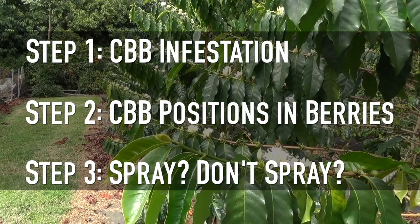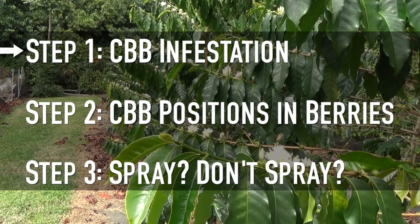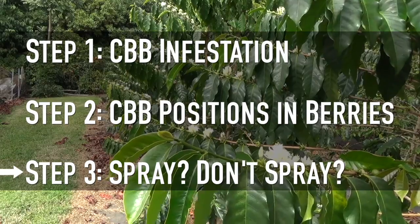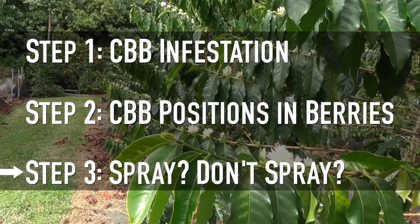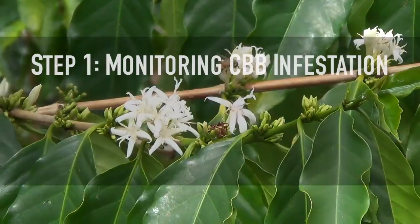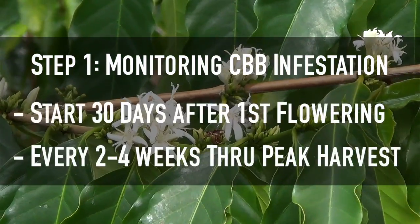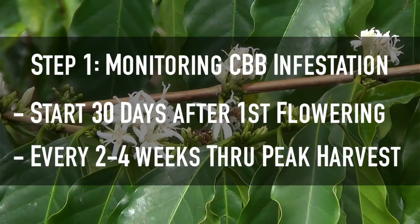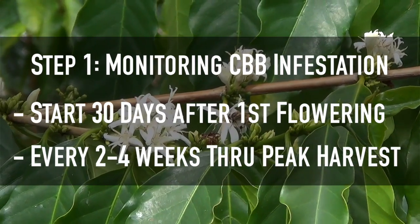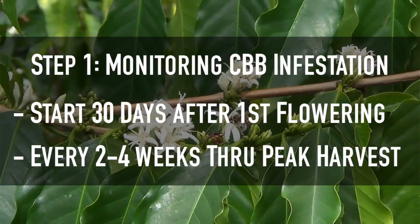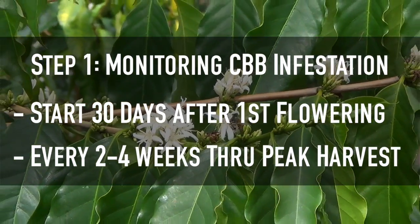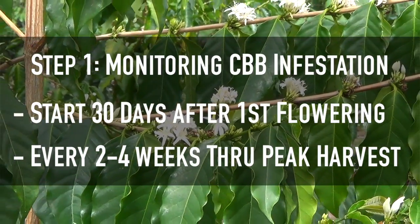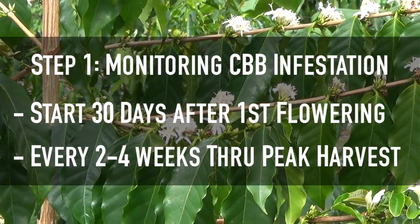This video will go over step one of the sampling. Steps two and three can be found in the second video. To begin step one, you'll start monitoring and sampling around 30 days after your initial flowering. However, you may want to start sooner if your trap catch or your own observations indicate an increase in CBB activity.